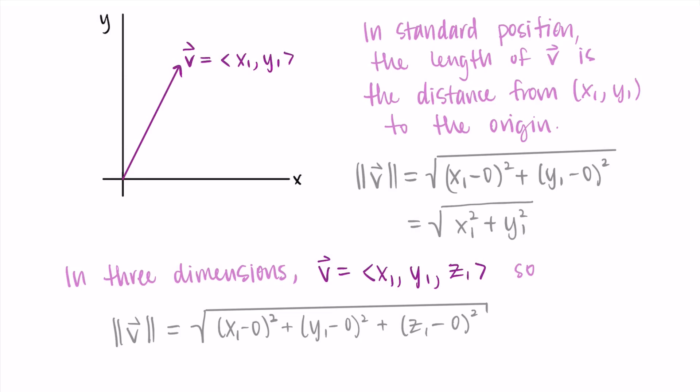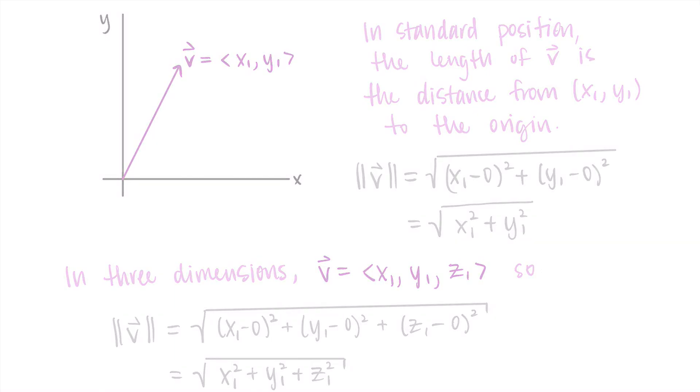Simplifying, we get the magnitude equals the square root of x₁² + y₁² + z₁². Finding the magnitude of a vector is as simple as using these formulas: take the x component squared plus the y component squared plus the z component squared and take the square root. Let's try this out on some examples.